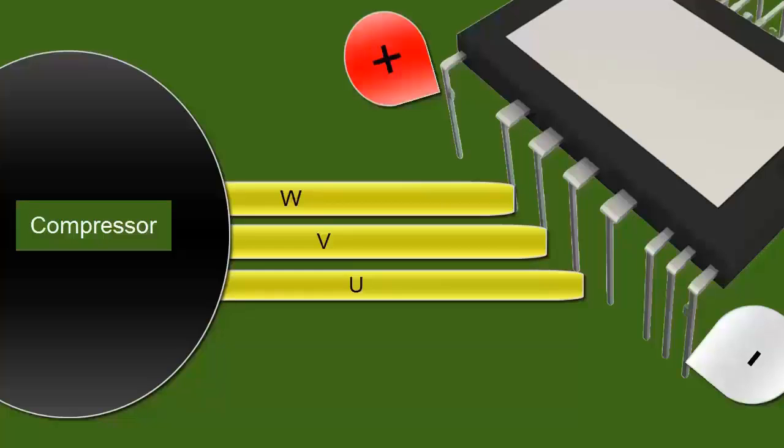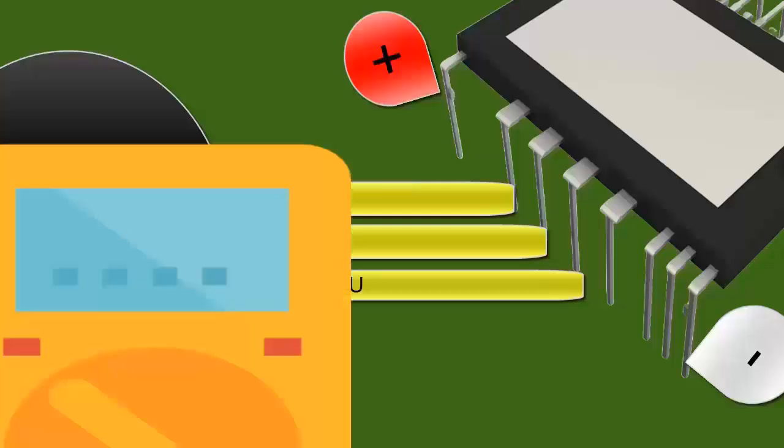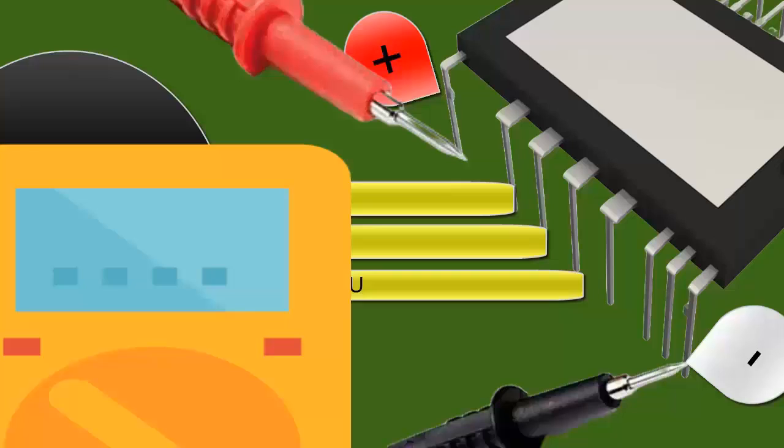14. Set the multimeter to the DC voltage scale at 400 volts. Place the red probe of the multimeter on the positive power supply of the IPM Electronic Circuit. Place the black probe of the multimeter on the negative power supply of the IPM Electronic Circuit.